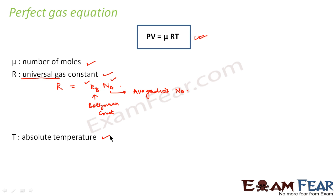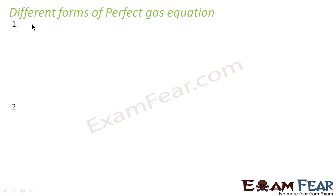Now we will see how can I represent the perfect gas equation in some other form. So there are different forms of the perfect gas equation. Now let us look at the first form. So to start with, which is the perfect gas equation? That was PV is equal to μRT. This was our perfect gas equation as defined.